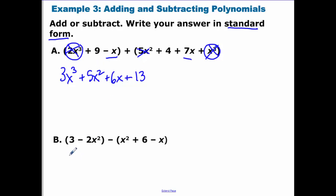Now, when you're subtracting, what I want you guys to do is just distribute the negative through. And now combine like terms. So I have a negative 3X squared plus X minus 3. And there we are.